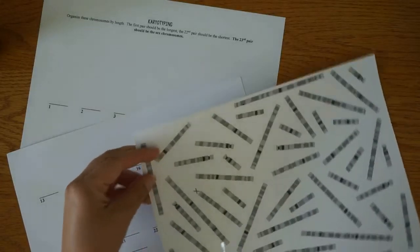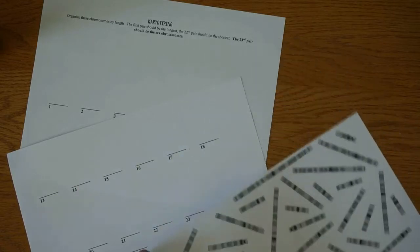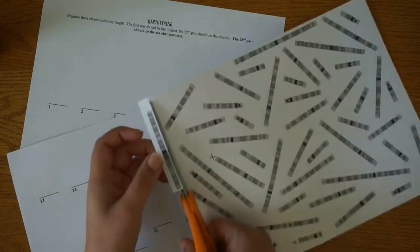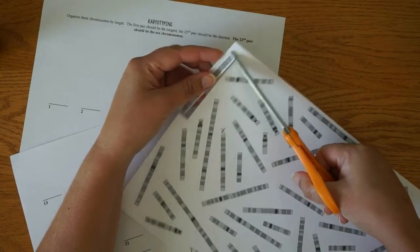Okay, we're going to work on our karyotyping assignment. The first step is to take your chromosome sheet and you are going to cut out all the individual chromosomes one by one.